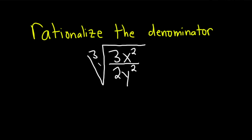Hi, in this problem we're going to rationalize the denominator. So we have the cube root of 3x squared over 2y squared. The idea is to create something cubed down here on the bottom.